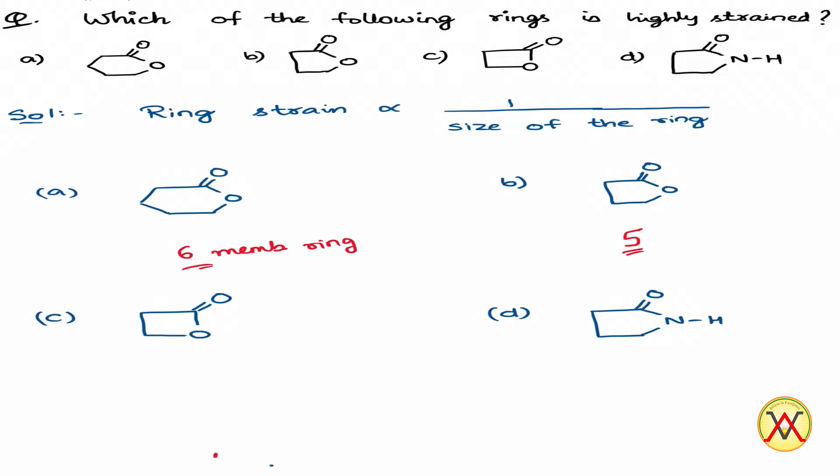In option C, the ring size is 4, and in option D, the ring size is 5. So we can see that because the C option has the smallest ring size,